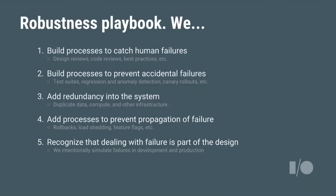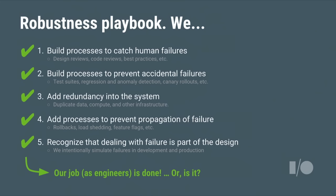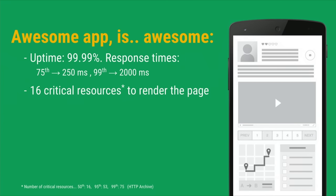But let's consider this case. Say you're building an awesome app with really good uptime measured continuously. If you look at your response times, you see 250ms for the 75th percentile and 2 seconds for the 99th — which by all measures is pretty good, pretty tight bounds. The app is fairly complex, with about 16 critical resources. Why 16? According to HTTP Archive, the median number of critical resources on a web page today is 16. I have a question for you: what fraction of page loads will take longer than 2 seconds?